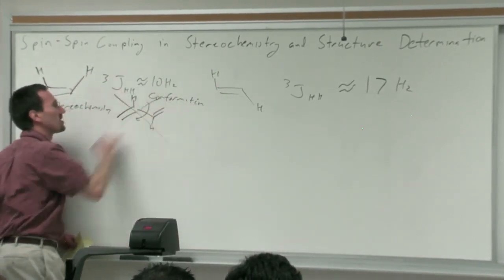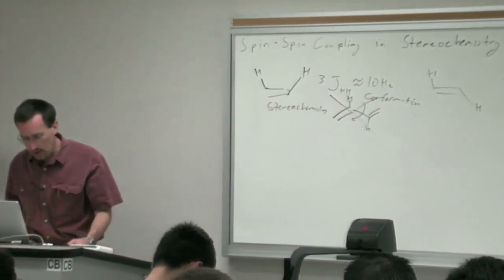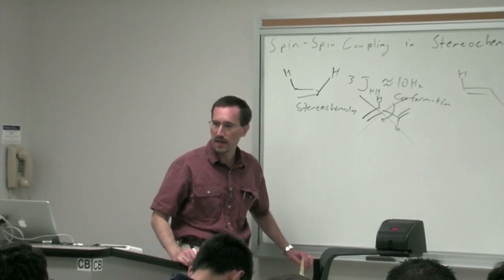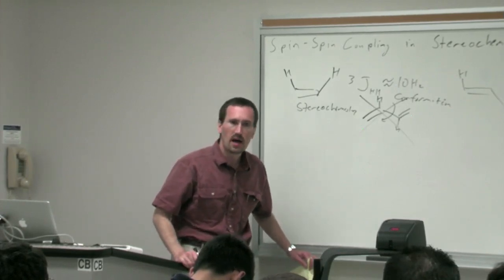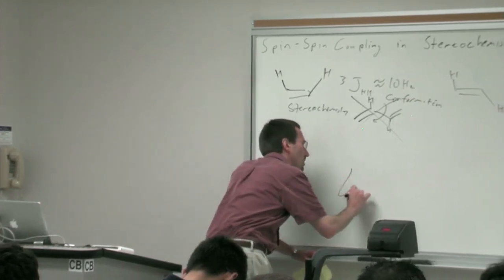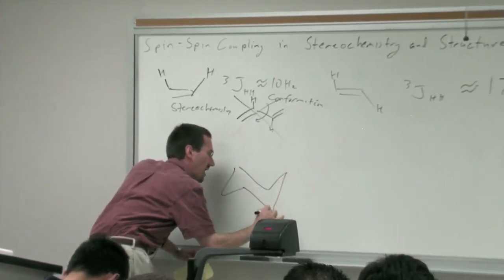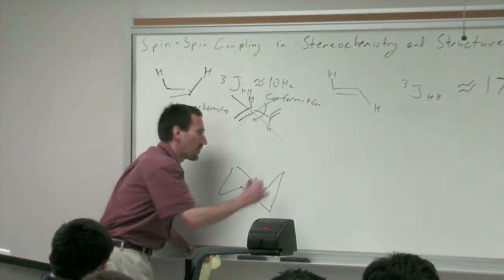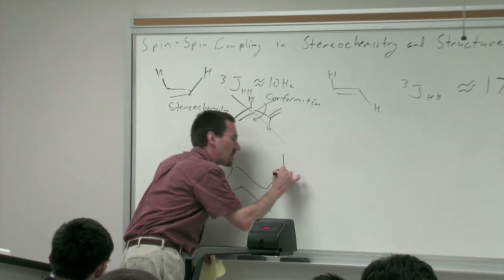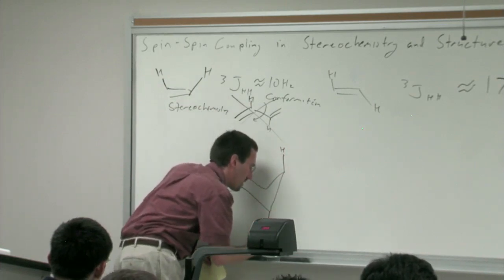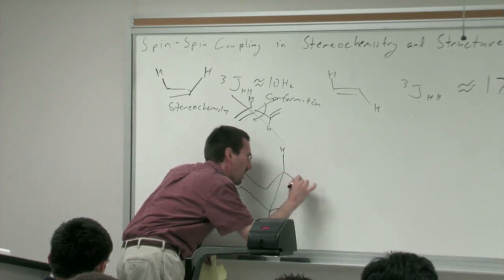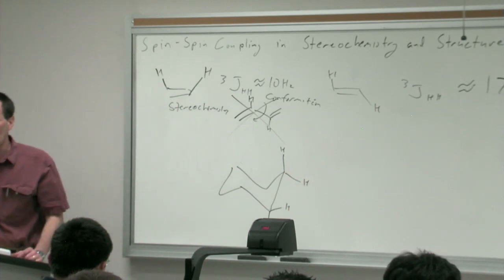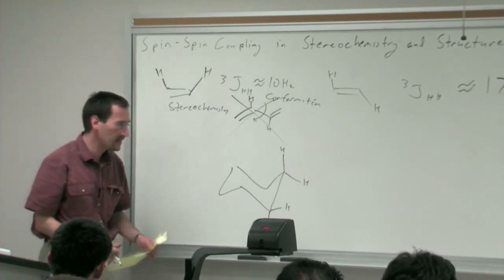Now let's talk about cyclohexane. Previously we discussed the Karplus curve for SP3-SP3 systems and noted distinct relationships in cyclohexane: 180 degrees gives you a big coupling constant, and a 60-degree relationship gives you a small coupling constant. Our axial coupling has a 180-degree dihedral relationship.